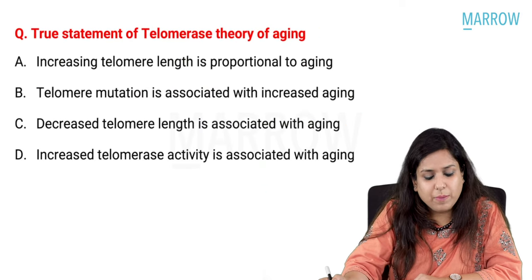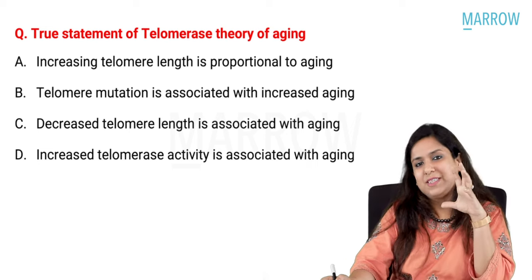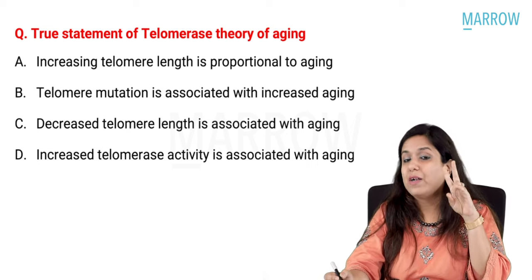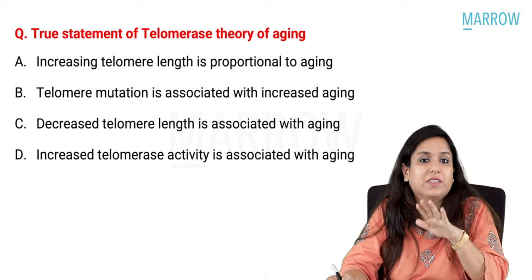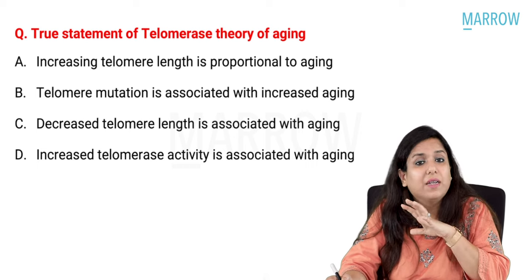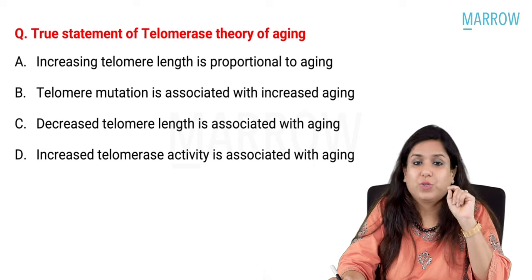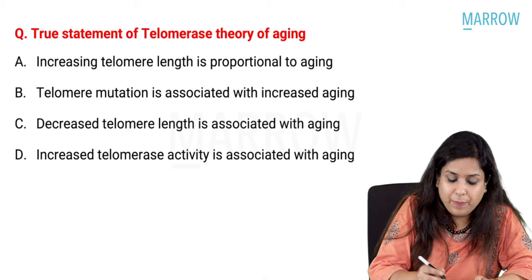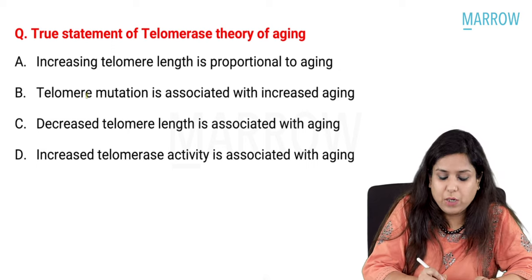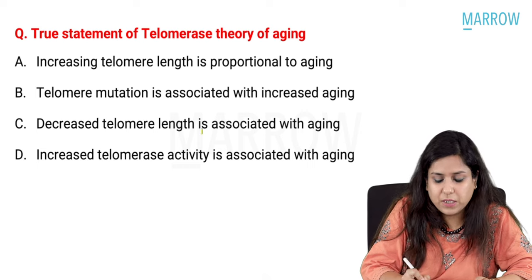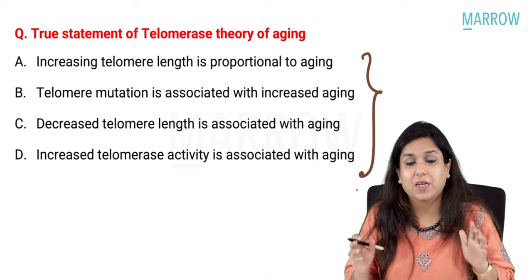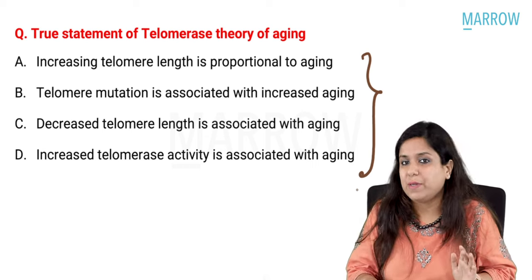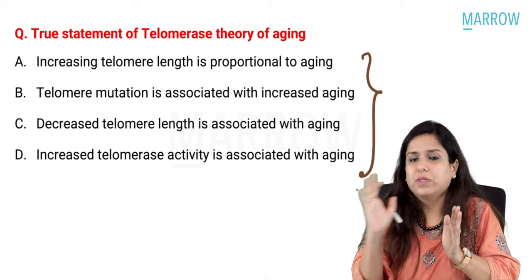Next question: true statement of the telomerase theory of ageing. This exam had two questions on cellular ageing — one on how to increase cellular lifespan and another on the telomerase theory. The options were: increased telomere length is proportional to ageing; telomere mutation is associated with increased ageing; decreased telomere length is associated with ageing; and increased telomerase activity is associated with ageing. Many students got confused with these four options.